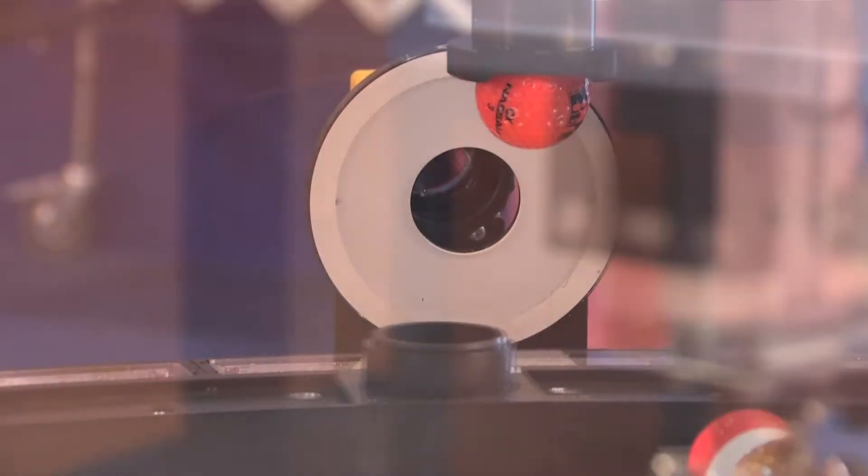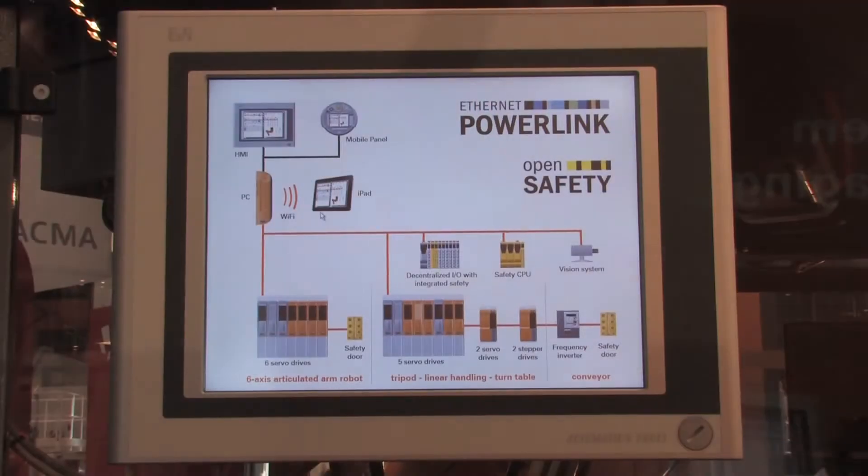At this demonstrator, we also see many different components from a variety of vendors. How are they communicating with each other? They simply communicate with Ethernet POWERLINK — an industrial Ethernet bus. You can connect all devices from B&R, but also third-party devices like this camera, which is directly connected with Ethernet POWERLINK. Many components on the market can be integrated into a B&R solution, including sensors and actuators.